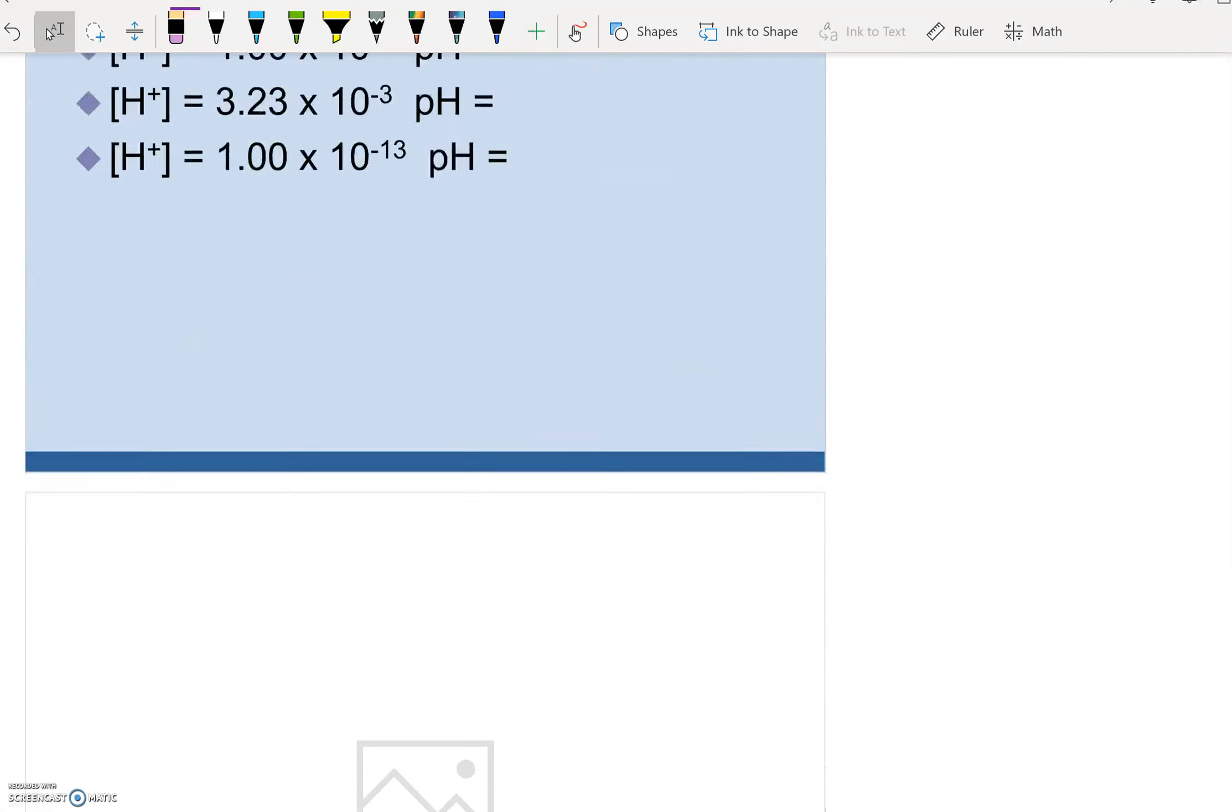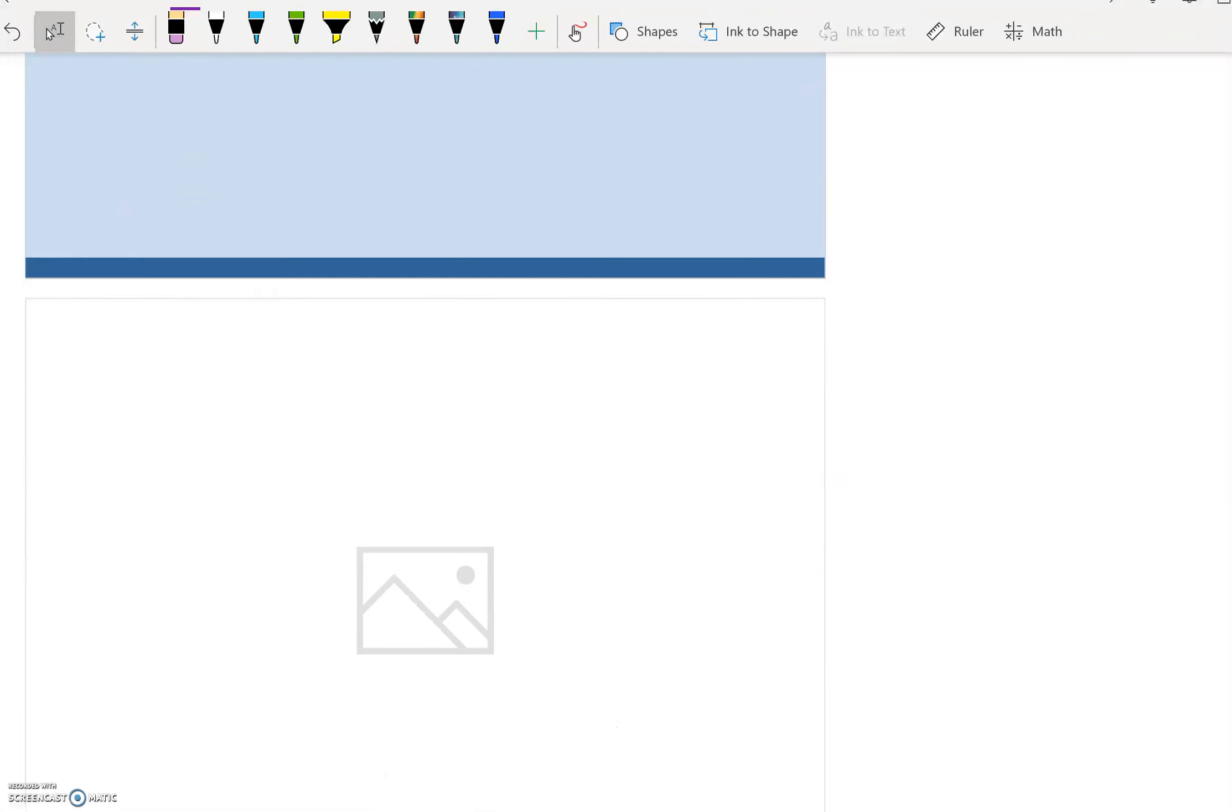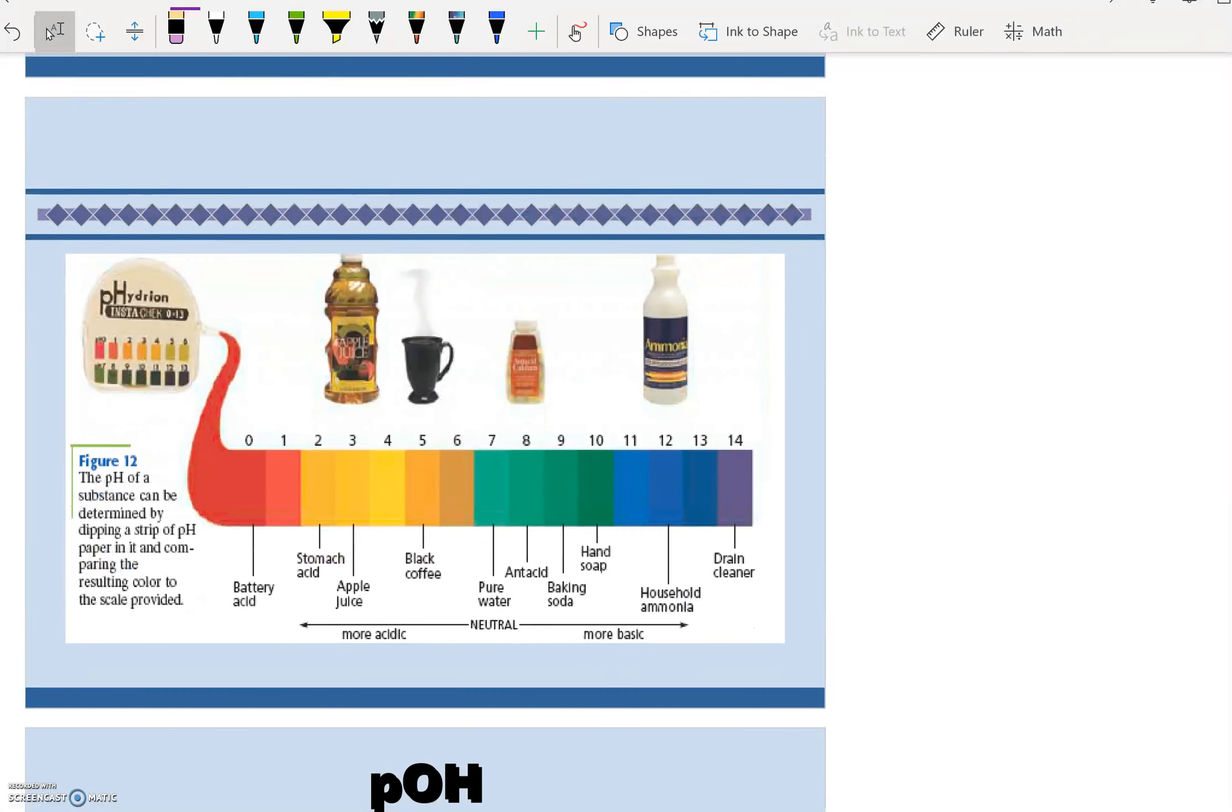I'm going to skip that part where it says pH values. Skip that slide. So here we are at the pH scale. The only way to tell if something is an acid or a base comes from pH. And only pH.